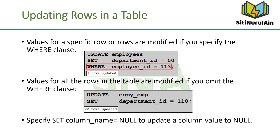The UPDATE statement modifies the values of a specific row or rows if the WHERE clause is specified. The example in the slide shows the transfer of employee 113 to department 50. If you omit the WHERE clause, values for all the rows in the table are modified. Examine the updated rows in the copy_EMP table by using the SELECT statement.